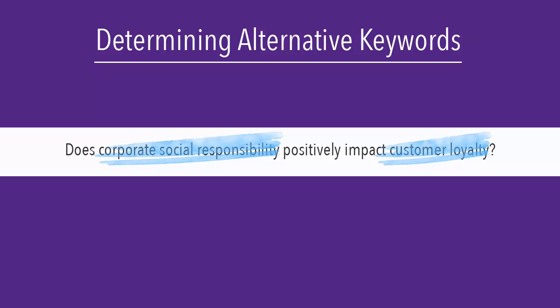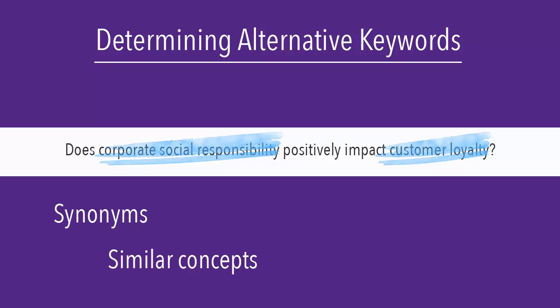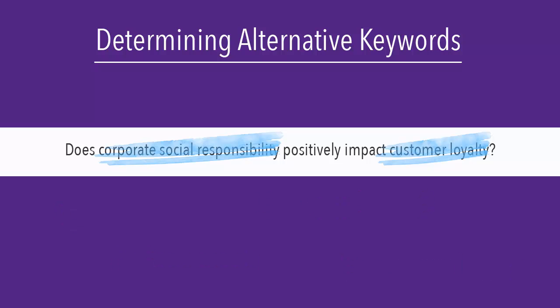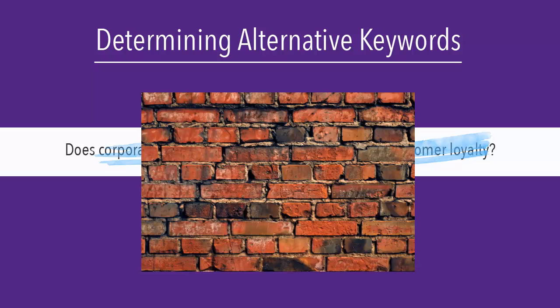After identifying your keywords, you should come up with alternative keywords. These alternative words might be synonyms, similar concepts, or words that are more specific or more general. Having a variety of keywords on hand makes it easier for you to change your search if you hit a brick wall while looking for articles.